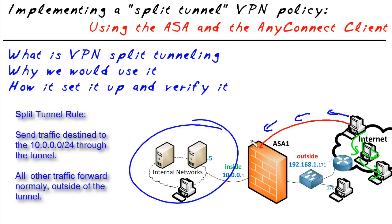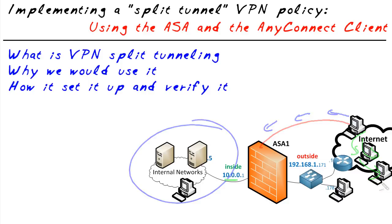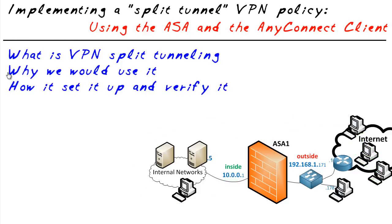Split tunneling only tunnels some of your traffic based on the destination — for example, the 10.0.0.0 network — and lets everything else that's not destined for that network go free and clear. Our next question is: why exactly would we set up split tunneling? Why would we tell the VPN client to only send traffic for the 10 network over the tunnel and send everything else out freely?